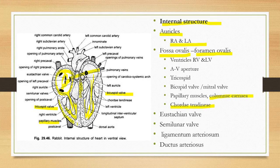The walls of the right ventricle and left ventricle are thicker. They are thick because they need to force the blood. The cardiac muscles are thick in order to pump the blood.